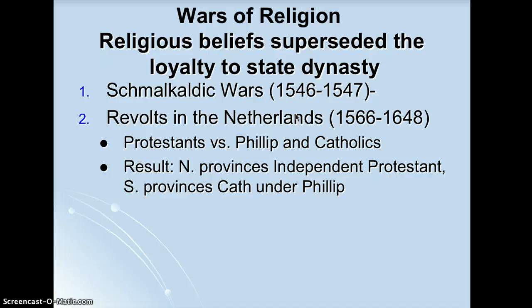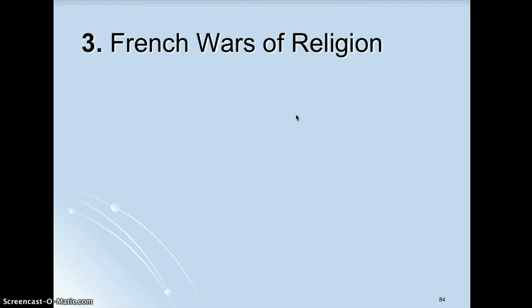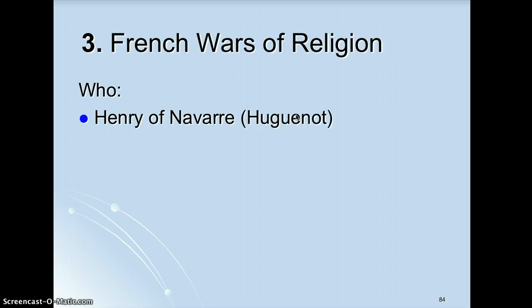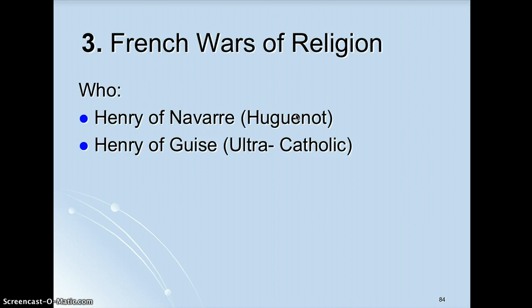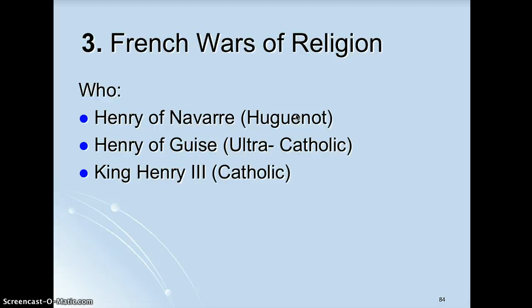The most important religious wars are the French Wars of Religion. Instead of one big war like the Hundred Years' War, it's a series of 13 short wars — a three-sided struggle. You've got Henry of Navarre, the French Calvinist (a Huguenot is a French Calvinist), as the Protestant. Henry of Guise is the ultra-Catholic, backed by the Jesuits, the papacy, and Philip II. Then there's King Henry III, the son of Henry II from the Schmalkaldic Wars, a regular Catholic and part of the Valois ruling family.